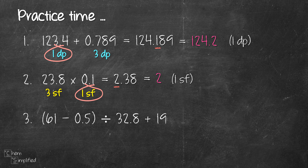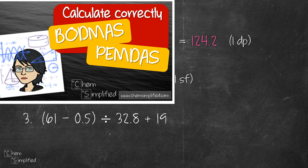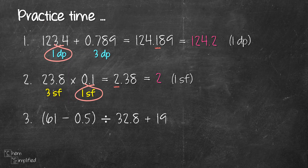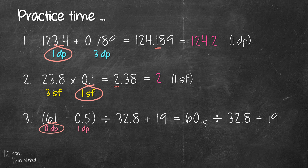The third question involves multiple operations. We have a parenthesis — inside the parenthesis there is a subtraction, and outside there are division and addition. We need to follow the order of operations; PEMDAS is a good guide to use. We solve the operation inside the parenthesis first. Since it's a subtraction, we look at the decimal place: 61 has 0 decimal places and 0.5 has 1 decimal place, so the result from this subtraction will have 0 decimal places. At this point, we don't want to round off anything yet — we keep all the digits and continue with the rest of the calculations. The result from the subtraction is 60.5, which should be 61 in 0 decimal places, but we don't round off yet.